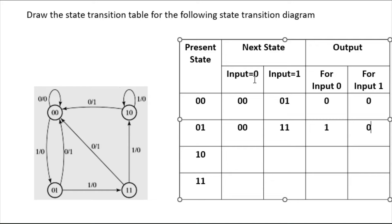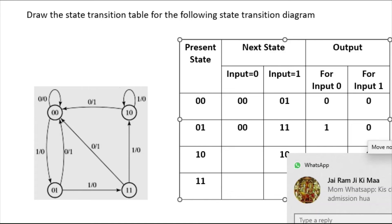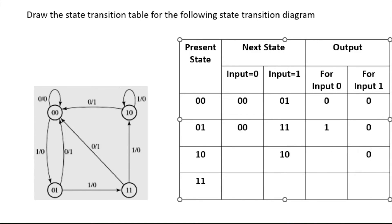To clarify: input value 0 tells you the next state and output for input 0; input value 1 tells you the next state and output for input 1. Now for state 10: there is no transition for input 1, so the next state stays 10 and the output is 0. For input 0, state 10 goes to state 00 and the output is 1.